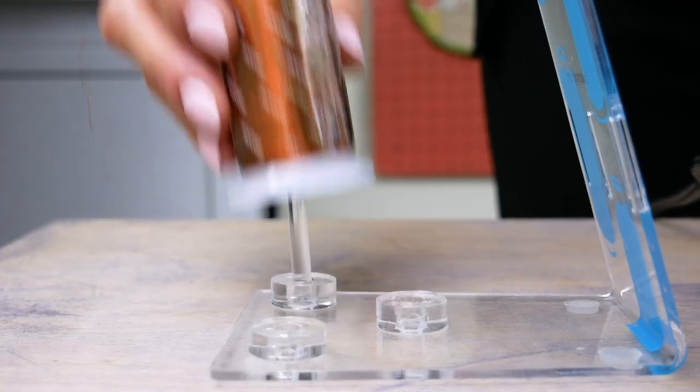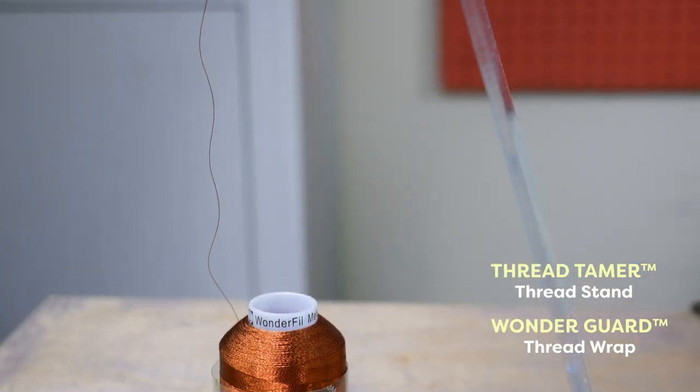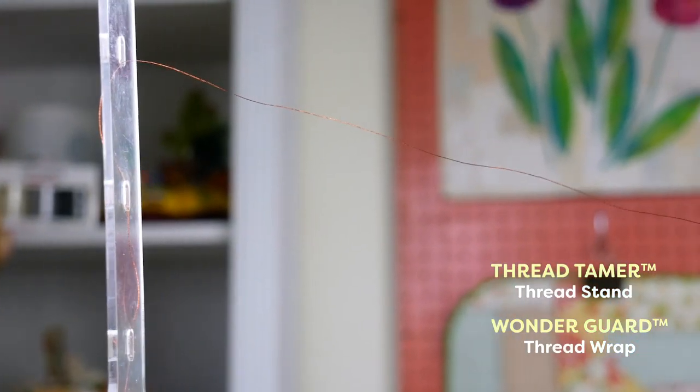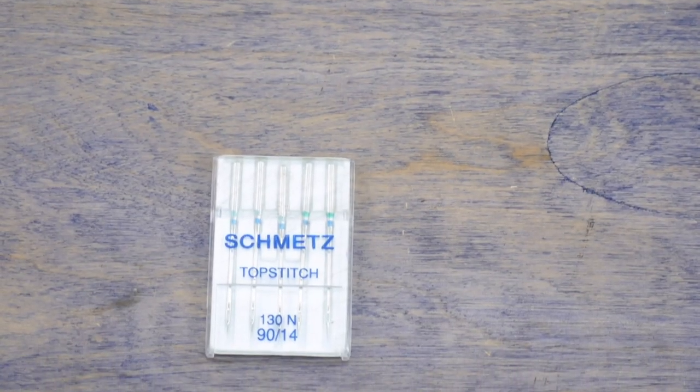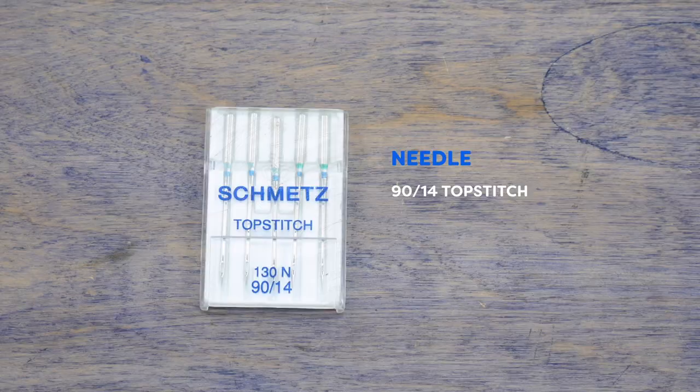As always, I'll be using a Thread Tamer and a Wonder Guard to tame the curl in the metallic thread, and we'll be using a large eye 90/14 topstitch needle to stitch the metallic thread.